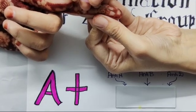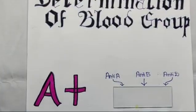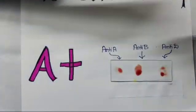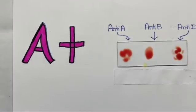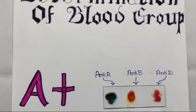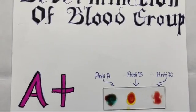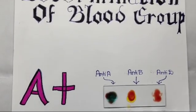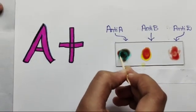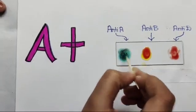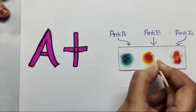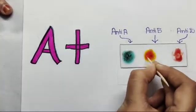Let's see how to determine A positive blood group. Follow the same procedure and check whether clotting has occurred or not. Clotting is seen only in anti-A and not in anti-B. That means antigen A is present and antigen B is absent. Hence, it is A blood group.